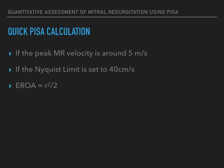There is a simplified approach to PISA quantification that has been validated. Certain conditions have to be present for it to hold true. Firstly, the Nyquist limit has to be set at 40 centimetres per second. Secondly, if the maximum MR velocity is 5 metres per second, the equation can be simplified and effective regurgitant orifice area is the radius squared then halved. An MR velocity of 5 metres per second represents a 100 mmHg pressure difference between the left atrium and left ventricle in systole. As there are additional assumptions and caveats, this simplified approach should only be used as a quick screen.